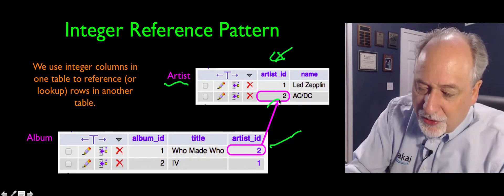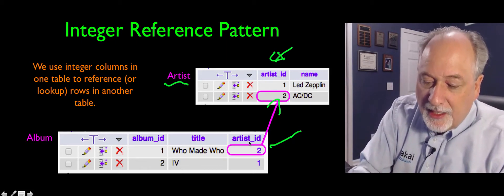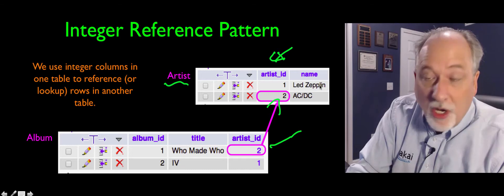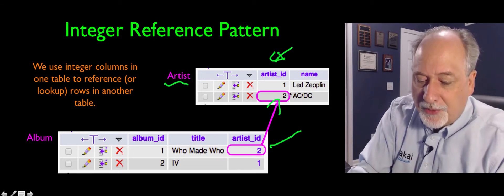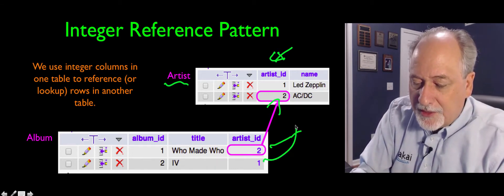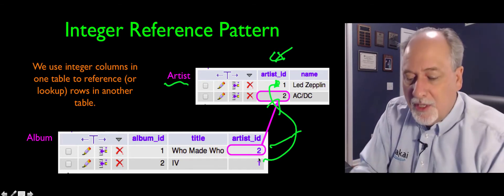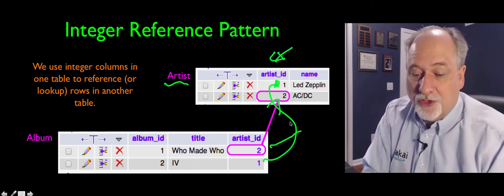And you can think of this arrow as having a direction. So artist ID points to a row in a different table, and that row is number two. And the same is true for Led Zeppelin, points to a row in this other table. So these are those arrows that we drew before.